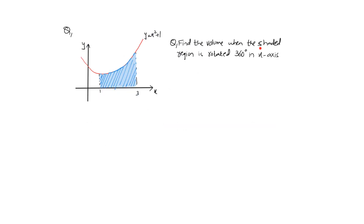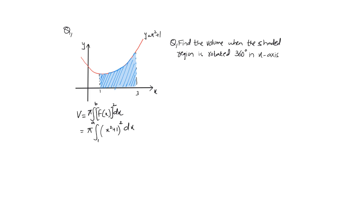Example: Find the volume when the shaded region is rotated 360 degrees about the x-axis. Since we're rotating about the x-axis, we need a function in x to be squared and integrated with respect to x. The function is y = x² + 1 and the limits are from 1 to 3.